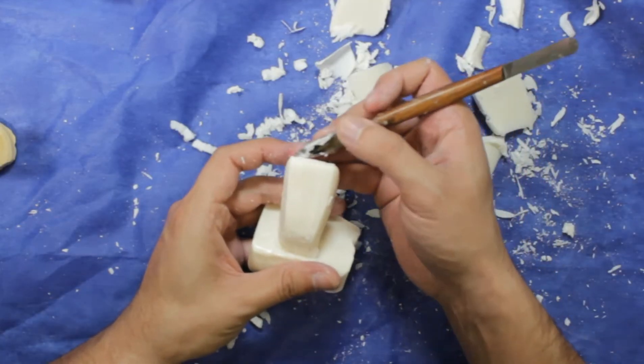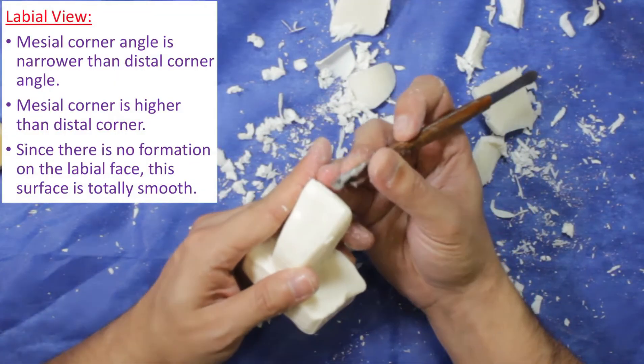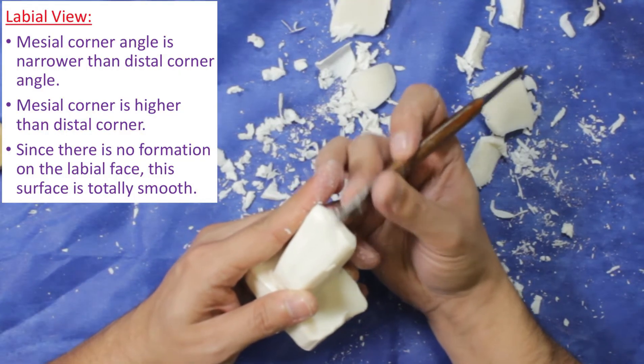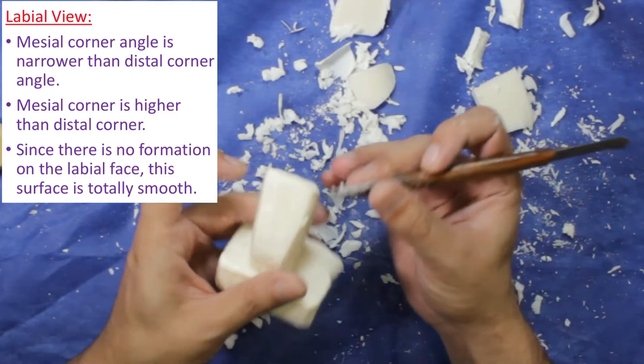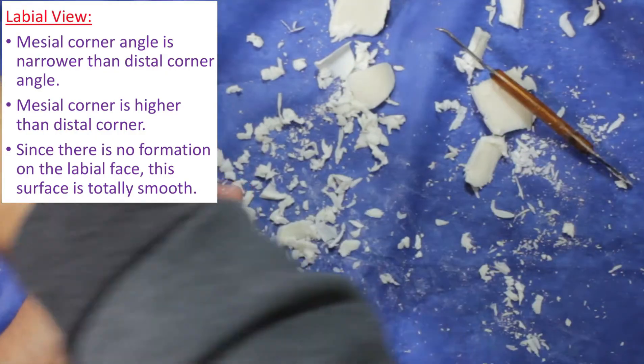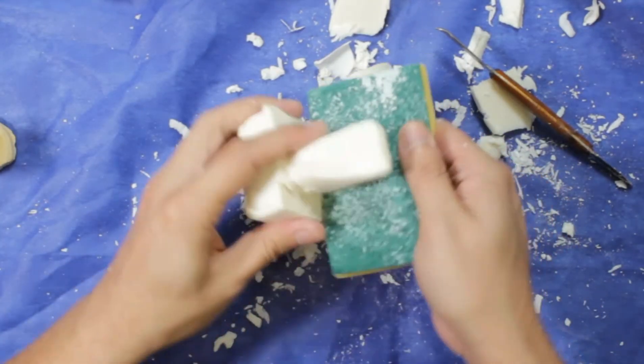Check your carving from each dimension. At here, mesial corner angle is narrower than distal corner angle. Mesial corner is higher than distal corner, as usual. Since there is no formation on the labial face, this surface is totally smooth. So there will be no growth grooves like the maxillary central incisor.